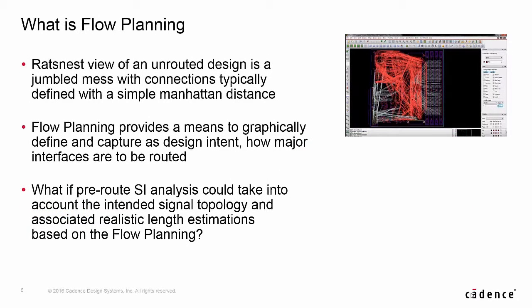If we're going to be talking about unrouted designs in Allegro Sigrity SI, then we also need to discuss flow planning. If you open an unrouted design you are typically faced with aptly named rat's nest lines that provide a simple indication of each pin pair that is not fully connected with etch. From an SI perspective we typically represent each pin pair distance at this stage with a Manhattan length, and while adequate in most instances it's still just an estimate. It's unrealistic to expect that each connection will be routed in a straight line — in reality it will be much closer to a sum of the x and y distance. Flow planning was recently added to Allegro Sigrity SI, where it allows you to graphically define and capture design intent.